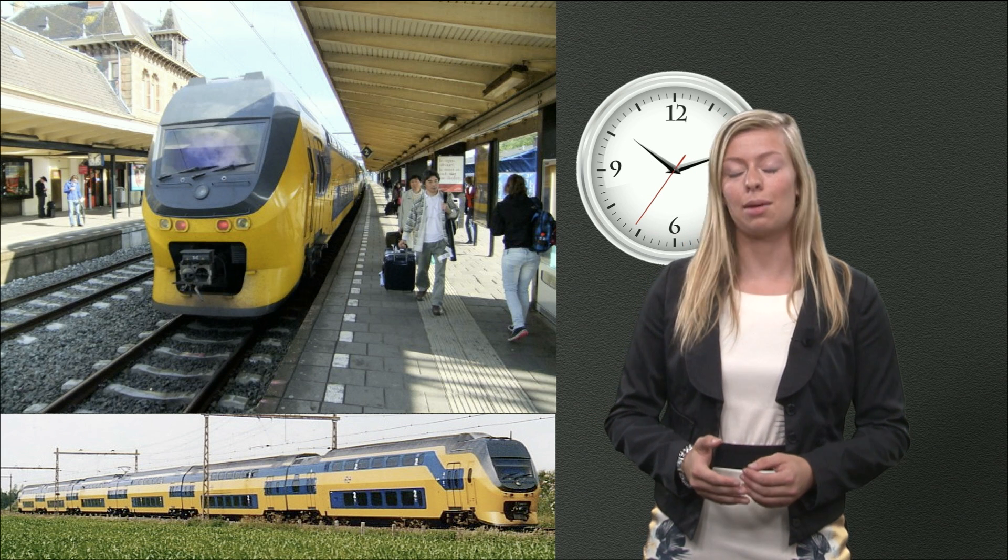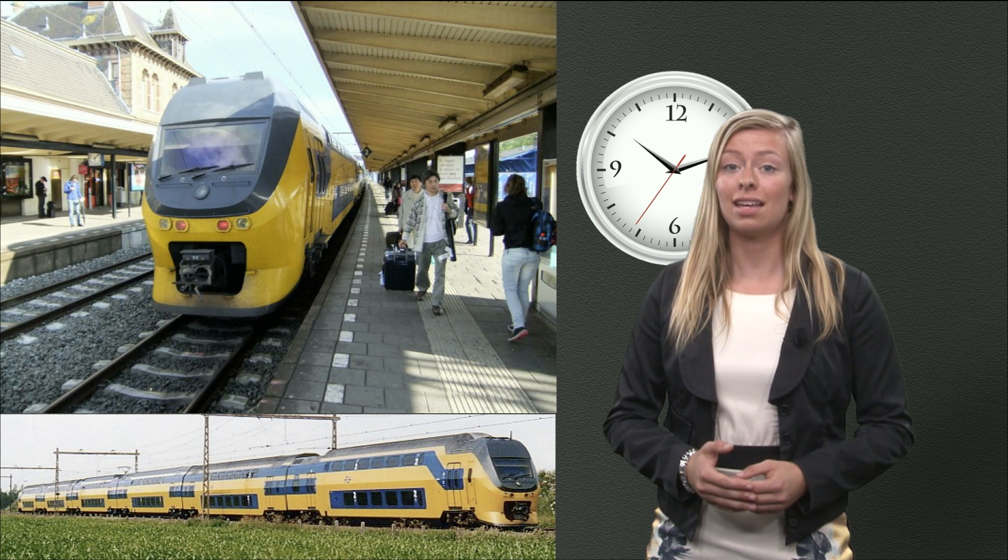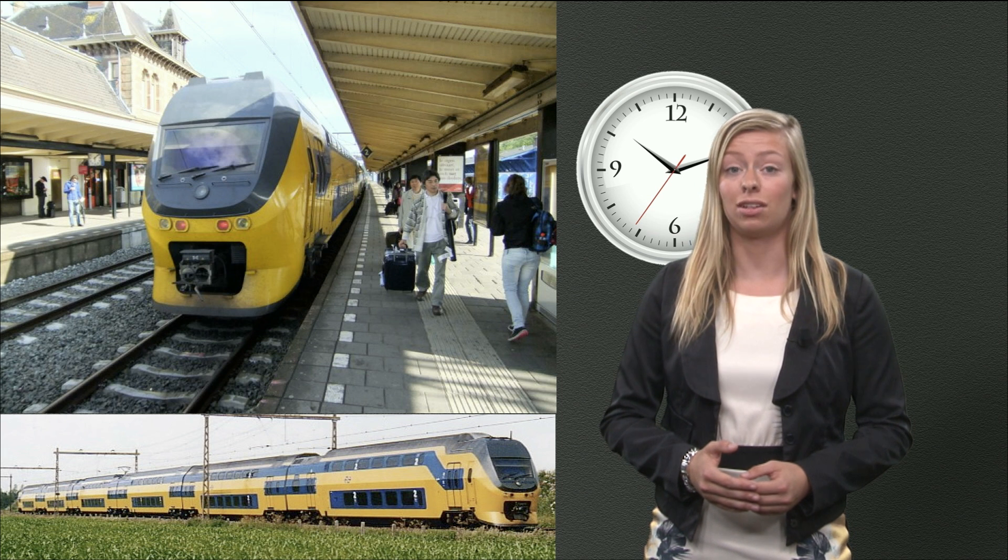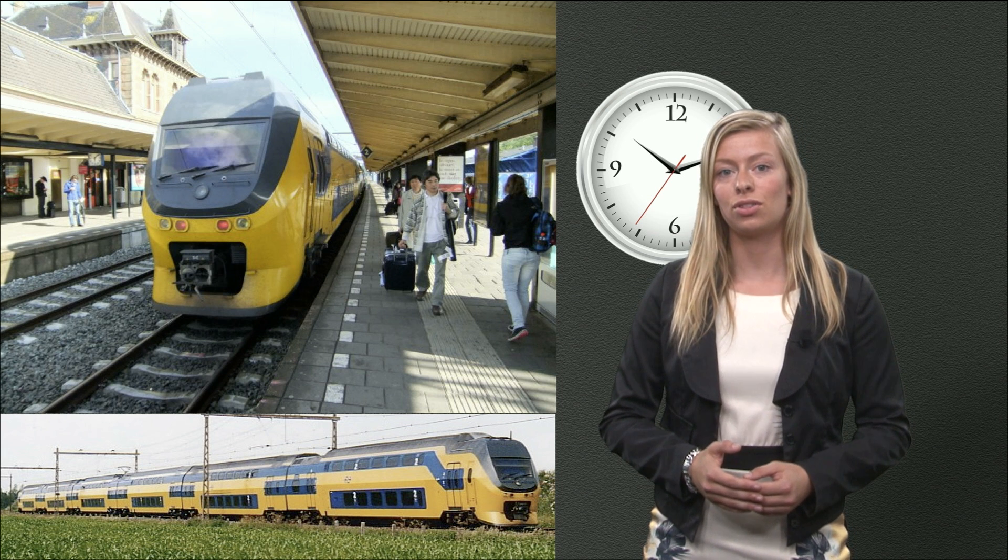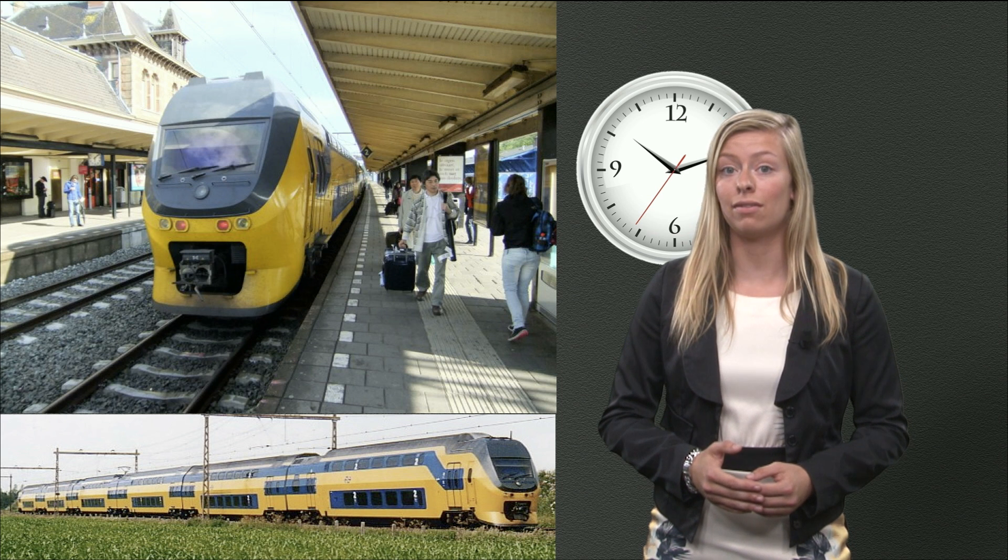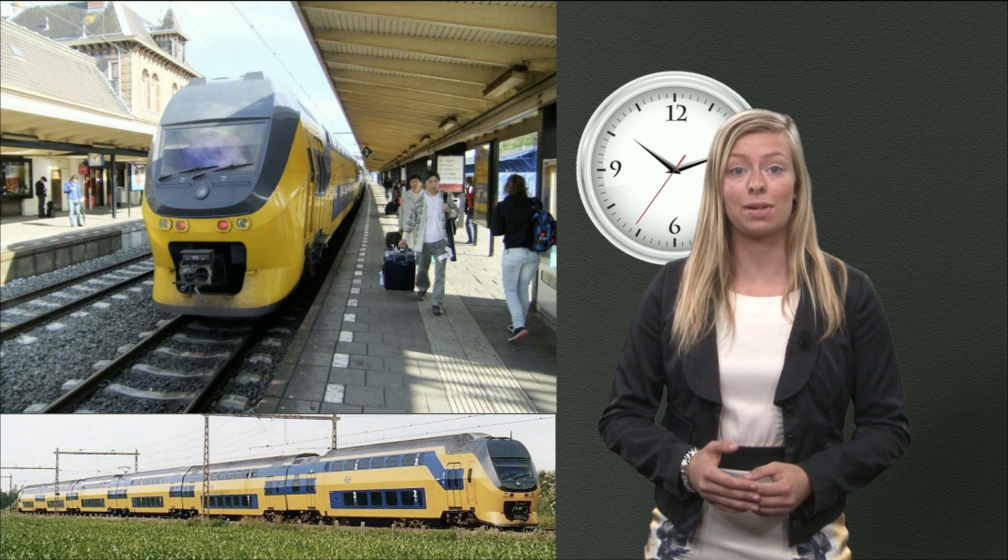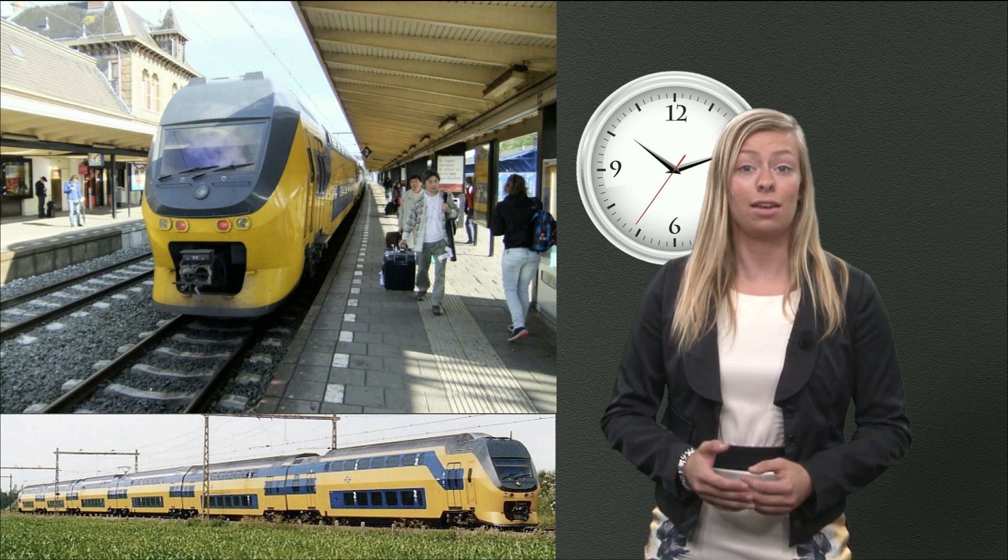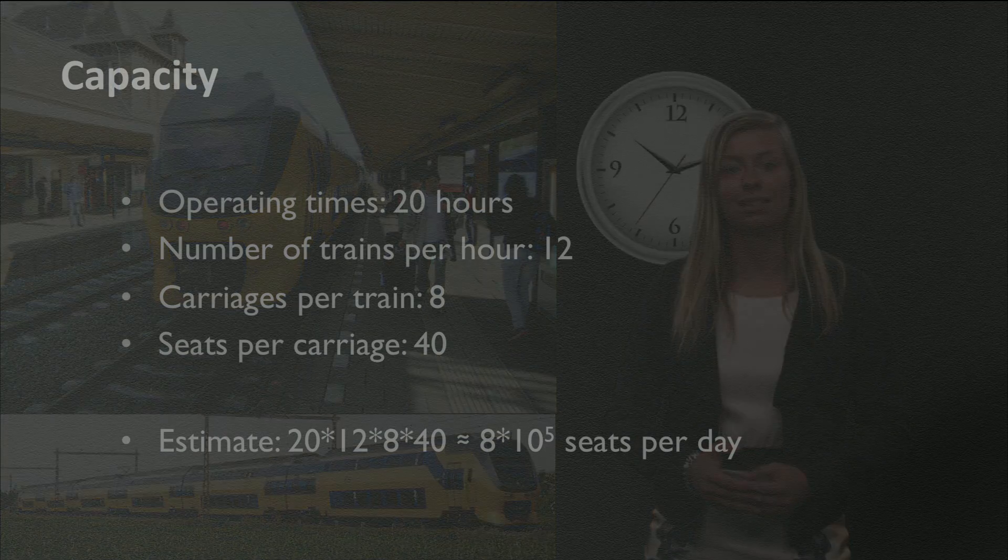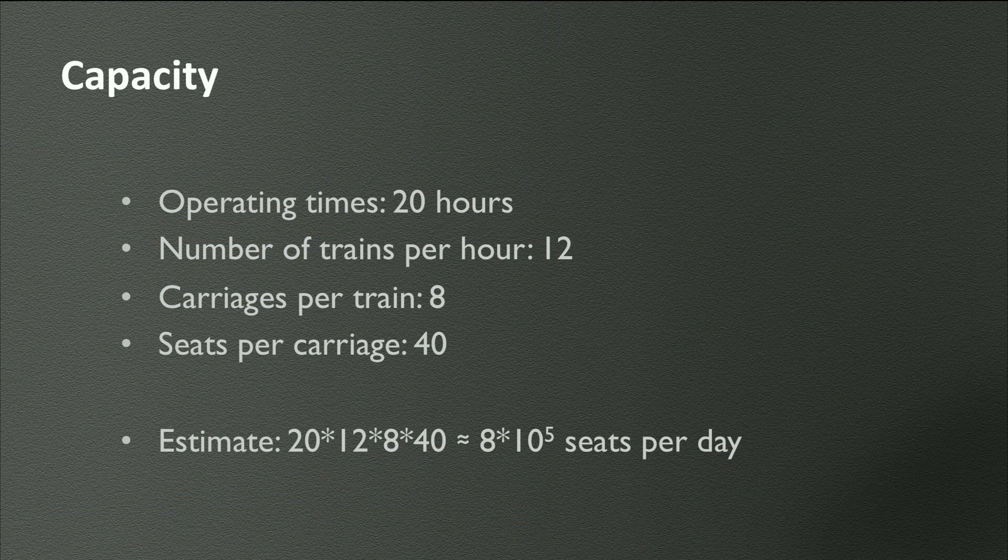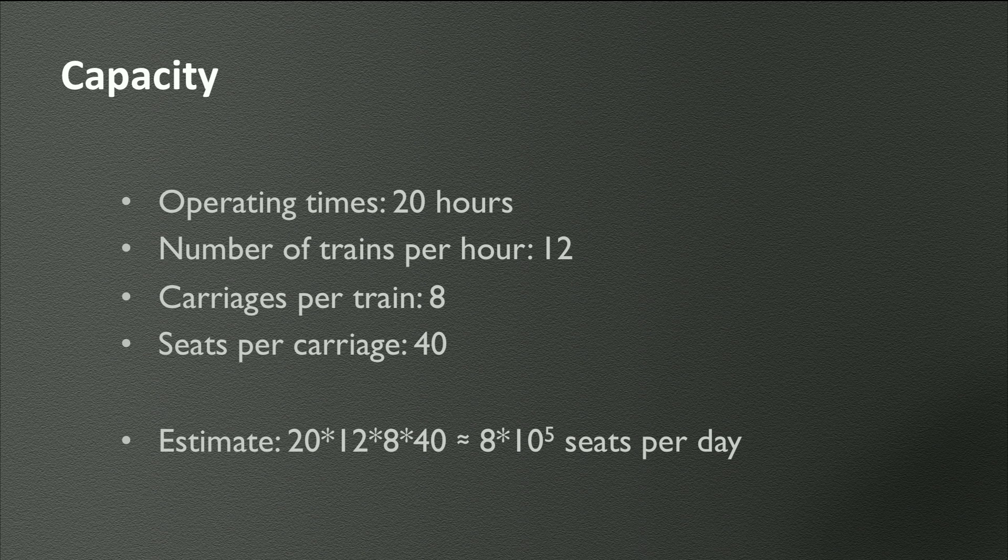As analysts, you quickly have to make an estimate on the back of an envelope. So, how many carriages does an average train have and how many seats are in such a carriage? 8 and 40 respectively? Fine. Then we are done. The capacity then is? 20 hours times 12 trains times 8 carriages times 40 seats is roughly 75,000 seats per day.